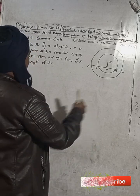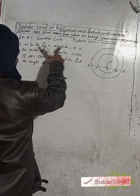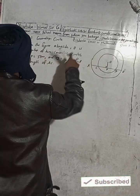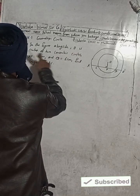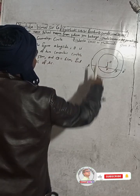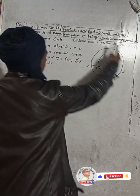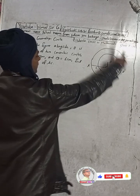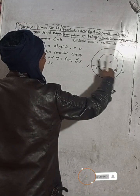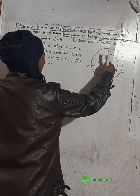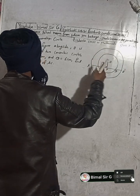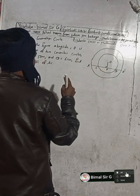Here is the question. In the figure alongside, O is the center of two concentric circles. Concentric means same center — same center for both. This center is for this small circle and for this big circle; that is concentric circles.